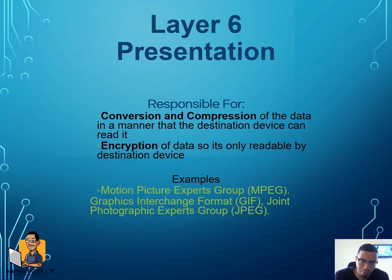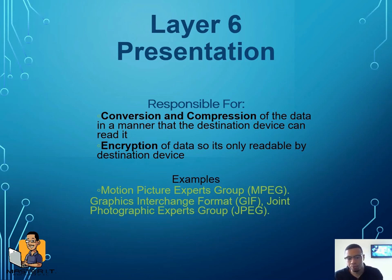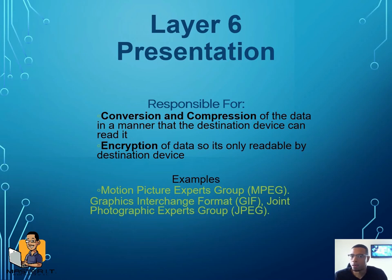Layer six is the presentation layer. Just like the name says, it's about how data is presented — how it looks to you on a website or application. Some examples are MPEG, GIFs, and JPEGs. GIFs are short looping images; MPEG can be a movie; and JPEG can be a picture. The main purpose of the presentation layer is how things look and how things are presented to the user.